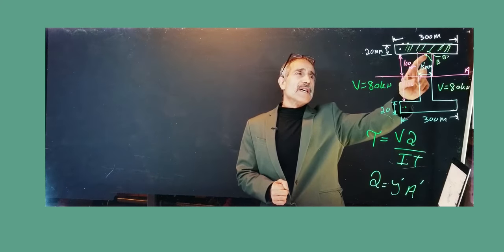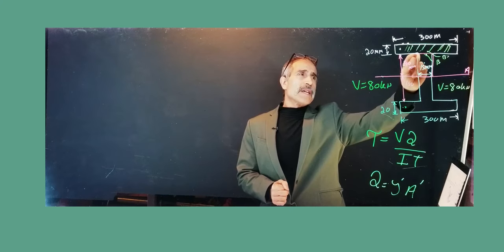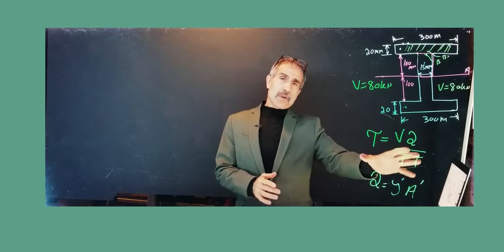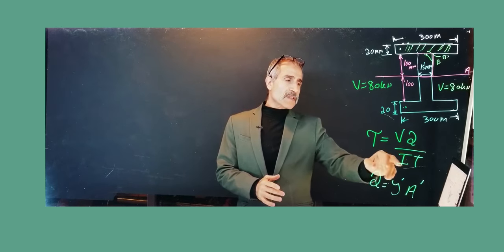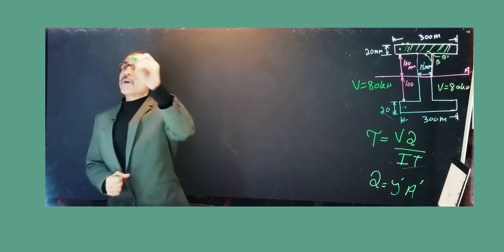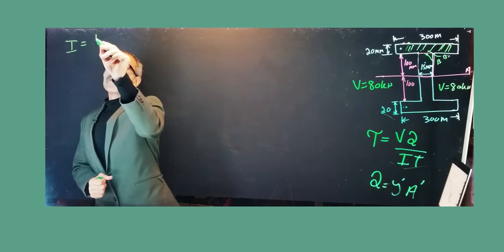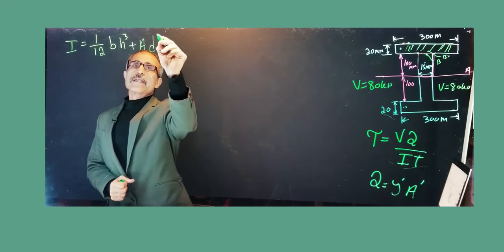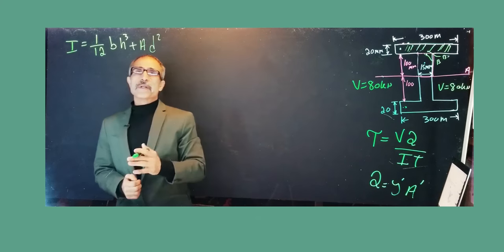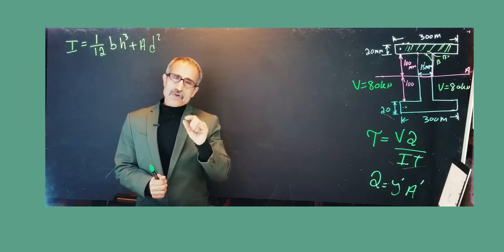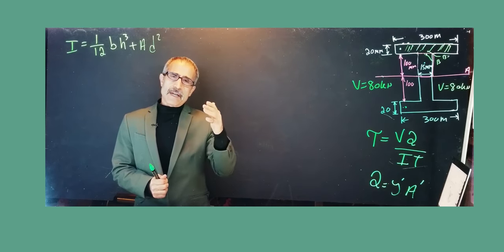B' is inside the flange and B is inside the web, but they're right on top of each other. To find the shear stress, we need VQ/IT. Let's first calculate I and then talk about Q. We know I = (1/12)BH³ + AD², where D is the distance between the centroid of the shape and the neutral axis.